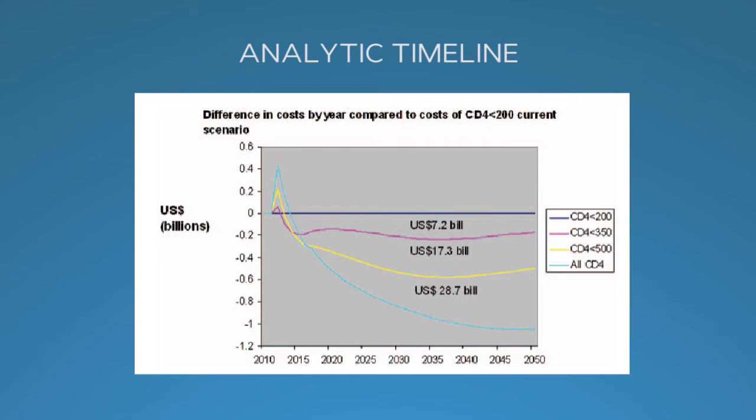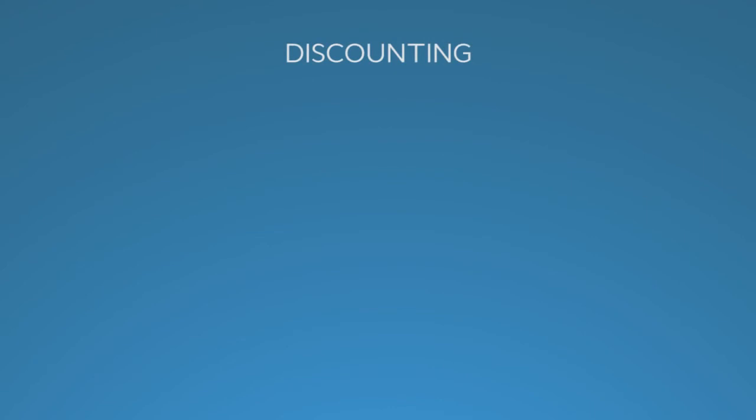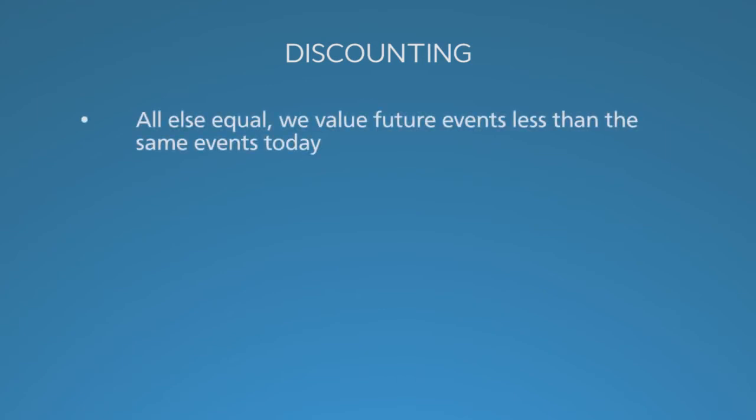Cumulative net savings, not shown in this figure, are achieved within 20 years. So, ask yourself: would you prefer to have $100 adjusted for inflation today or five years from now? Almost everyone says today. We adjust the value of future events in cost-effectiveness analysis because we value future events less than the same events occurring today.